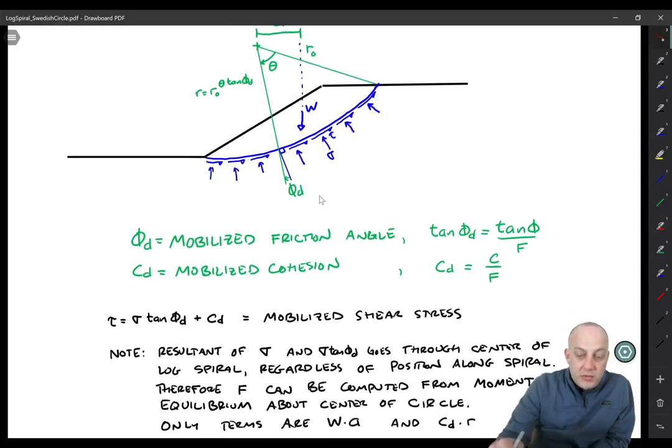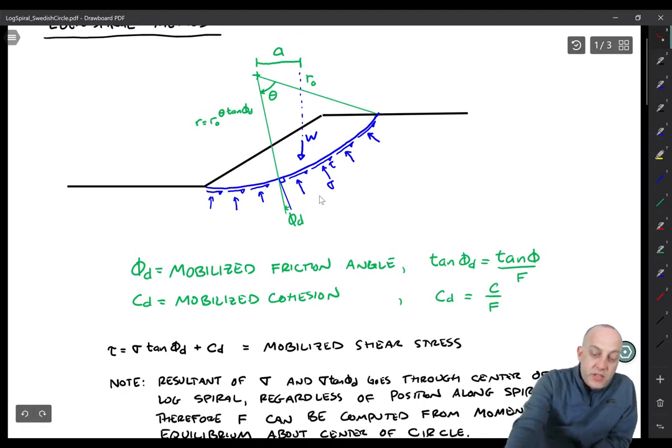Now one of the problems is that getting W and A is really pretty complicated. We have a slope that's easiest to define in Cartesian coordinate systems like x, y or x, z coordinates, and then we have this spiral that's easiest to define in polar coordinates.